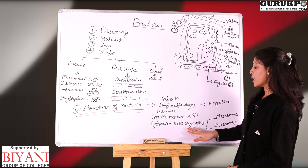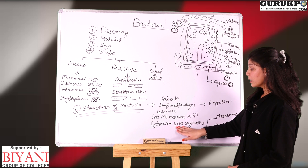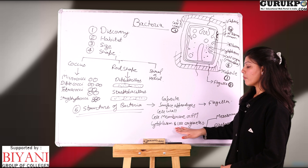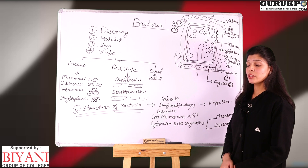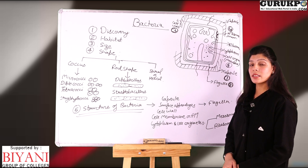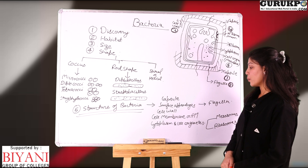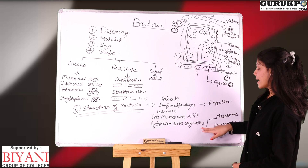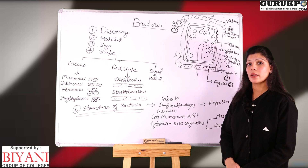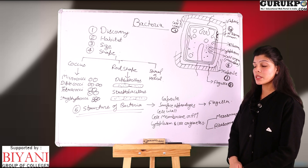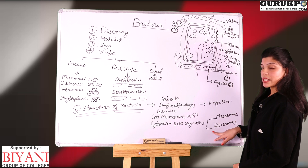The last point is the cytoplasm and cell organelles. 80% of cytoplasm is present in the form of water. Nucleic acids, carbohydrates, proteins, and lipids are also present in cytoplasm. Cell organelles are generally absent in bacteria because they are prokaryotic microorganisms, but two types of cell organelles are present.